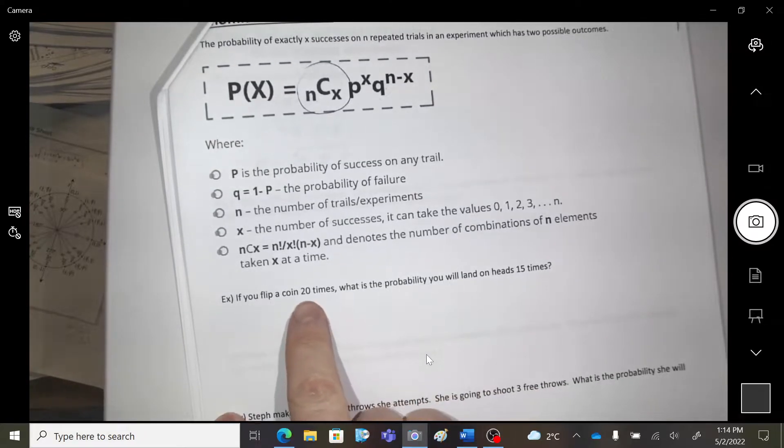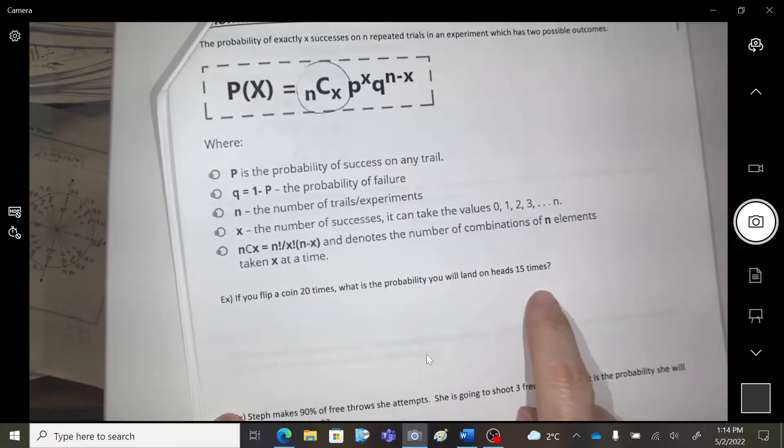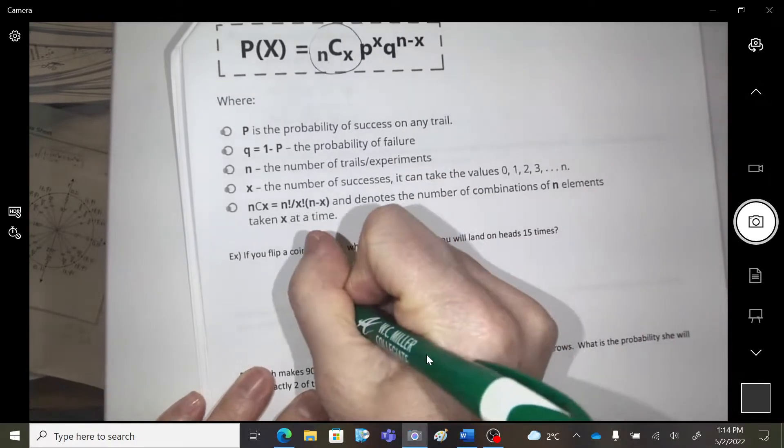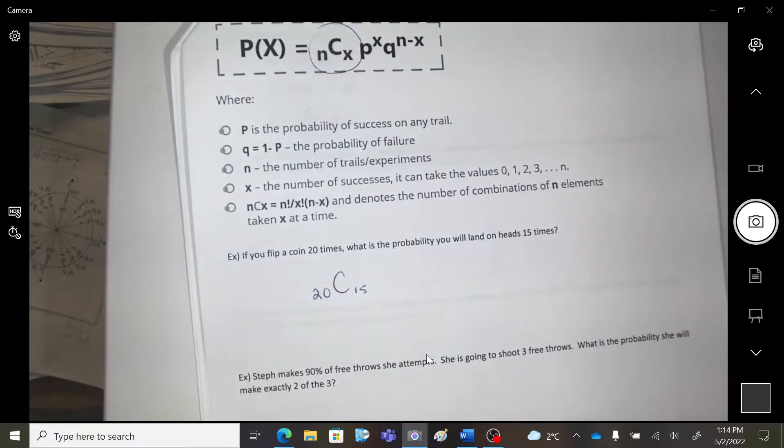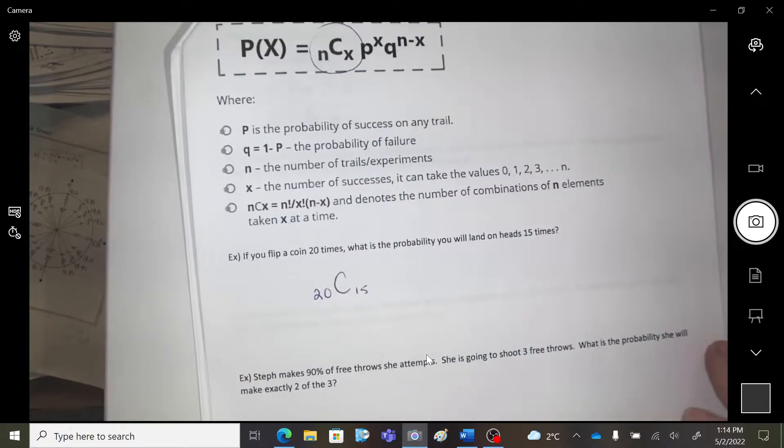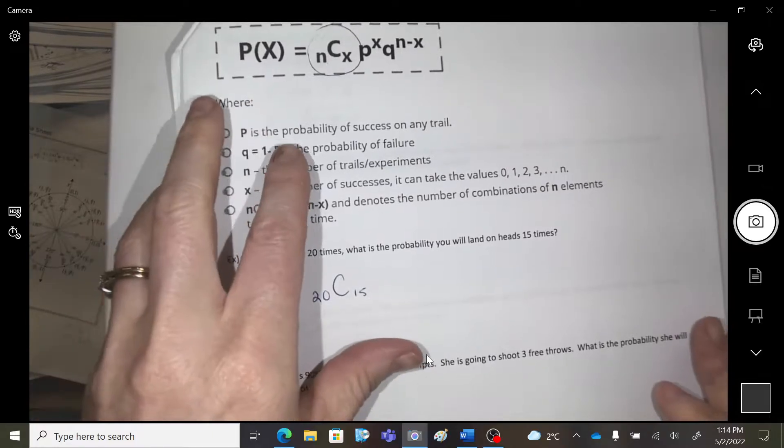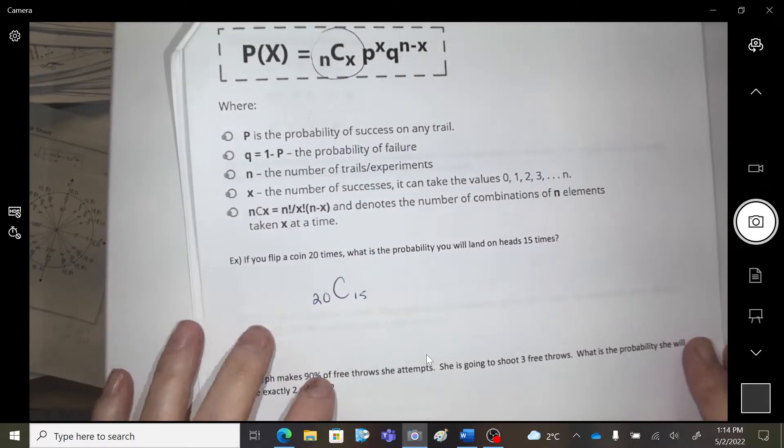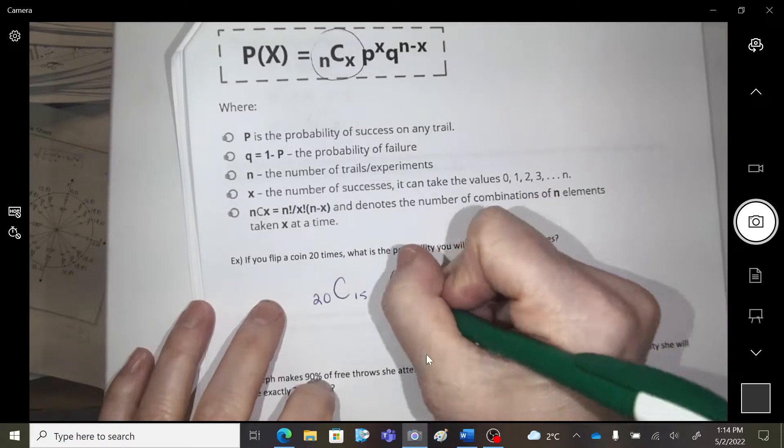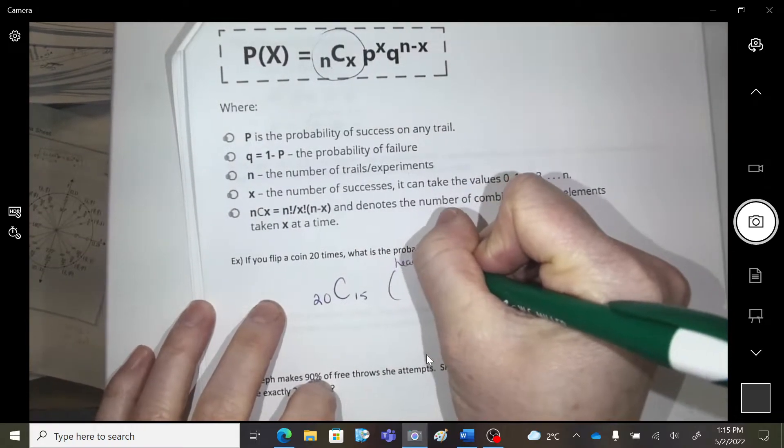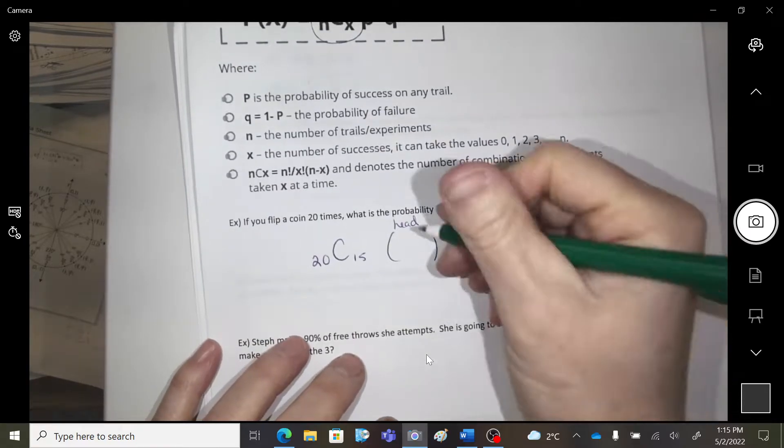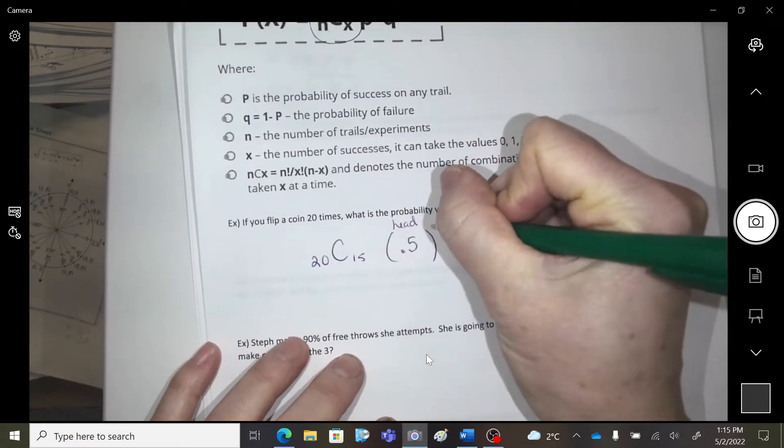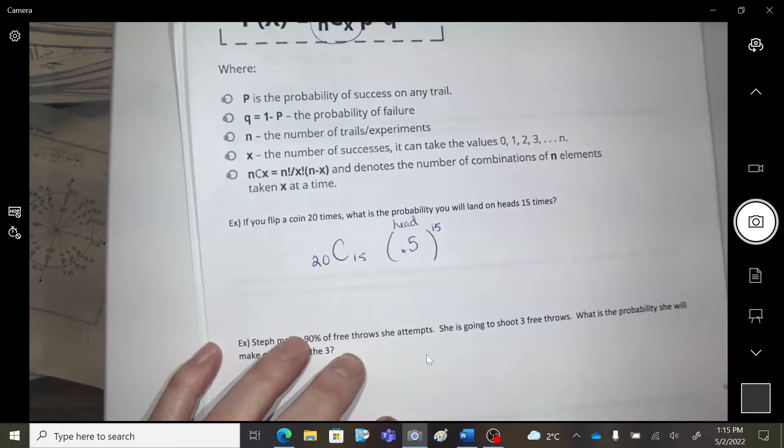So we had 20 coin flips, and we're trying to choose 15 of them to be a head. So 20 flips, we're trying to choose 15 of them to be a head. P is the probability of this happening. So what's the probability when you flip a coin it will be a head? 0.5, and we want to get that 15 times.